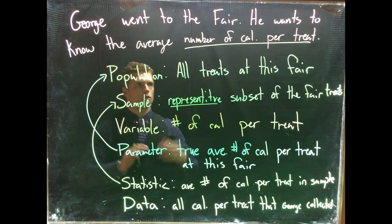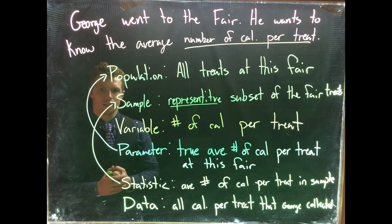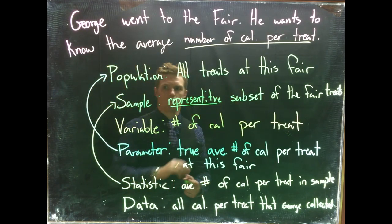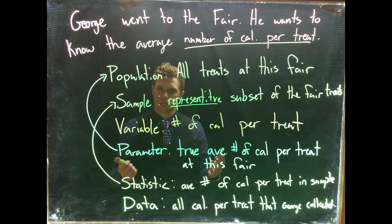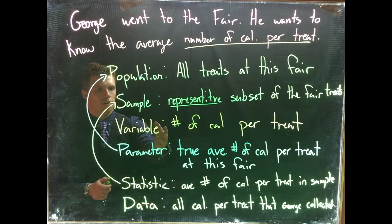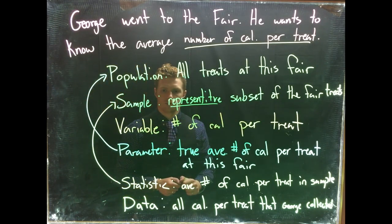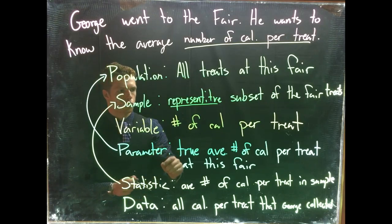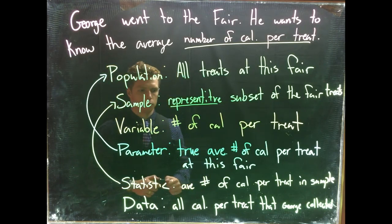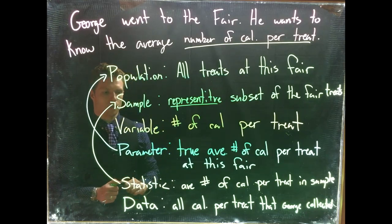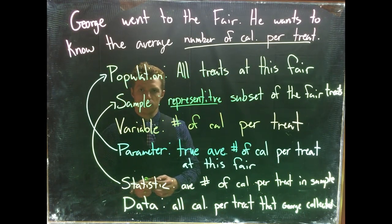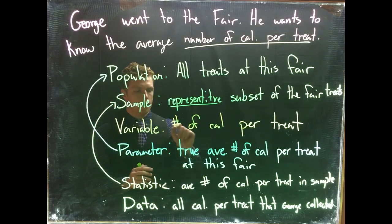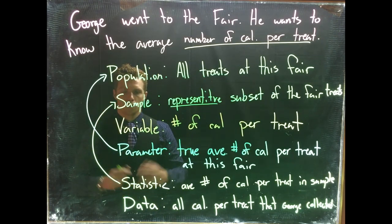So once again: George is going to the fair. He wants to know the average number of calories per treat at the entire fair. The population would be all treats from the fair. The sample would be a representative subset of the fair treats — maybe he sampled 40 or 50. The variable would be the number of calories per treat. The parameter he's interested in is the true average number of calories per treat at the fair. The statistic he would calculate is the average number of calories per treat in his sample. And the data would be that list of 50 treats he sampled and the number of calories for each of them.